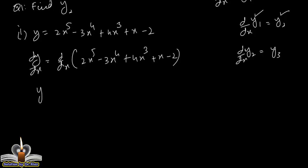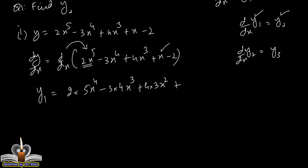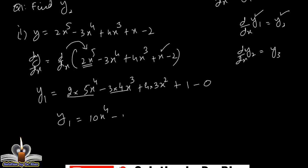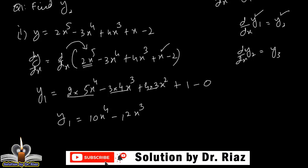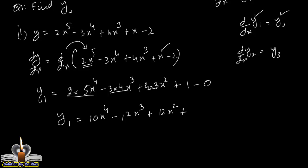اب dy/dx کو میں y1 لکھتا ہوں۔ یہ derivative ہر ایک پر الگ الگ apply ہوگا۔ 2 derivative سے باہر ہوگا، x power 5 کو differentiate کریں گے تو power rule سے 5x⁴؛ minus 3 into 4x³؛ plus 4 into 3x²؛ plus x کا derivative 1؛ اور minus 2 کا derivative 0۔ So y1 = 10x⁴ - 12x³ + 12x² + 1.